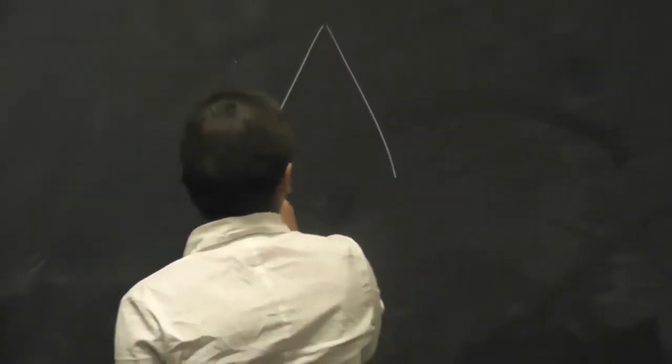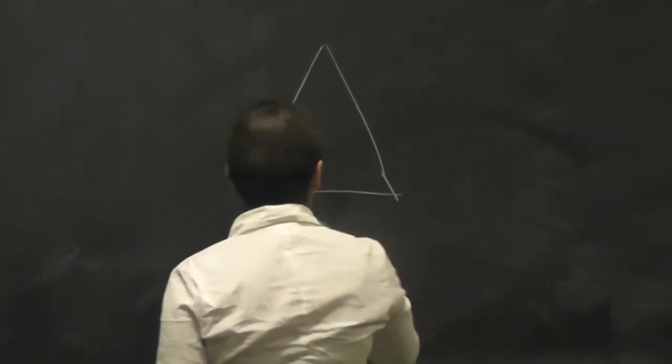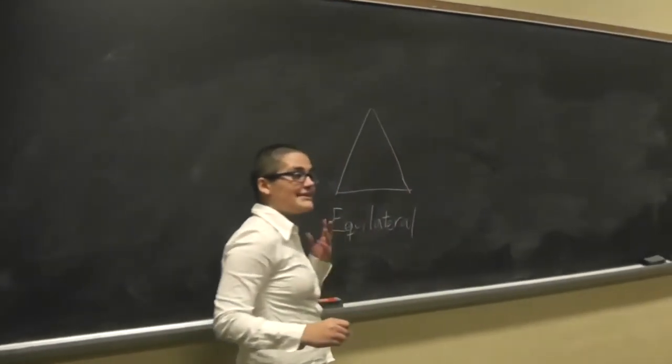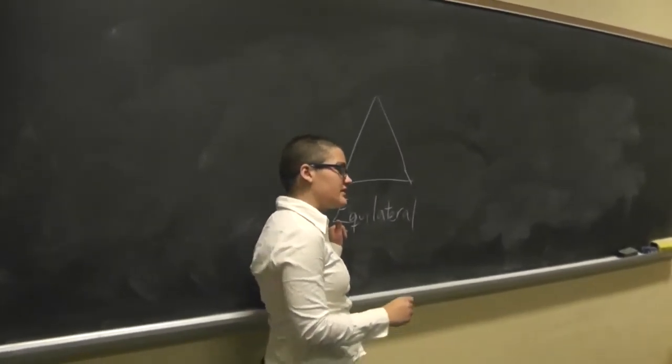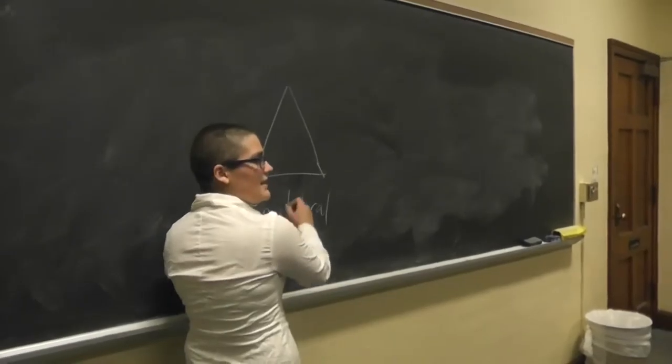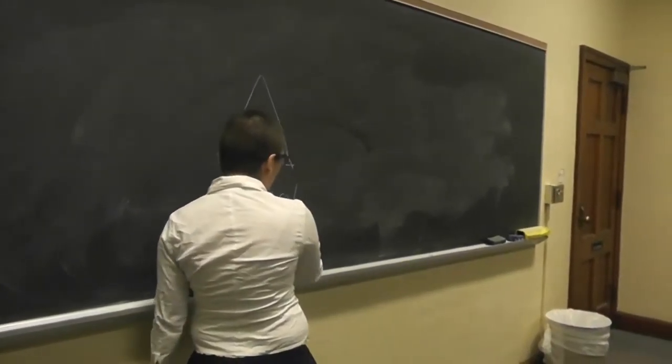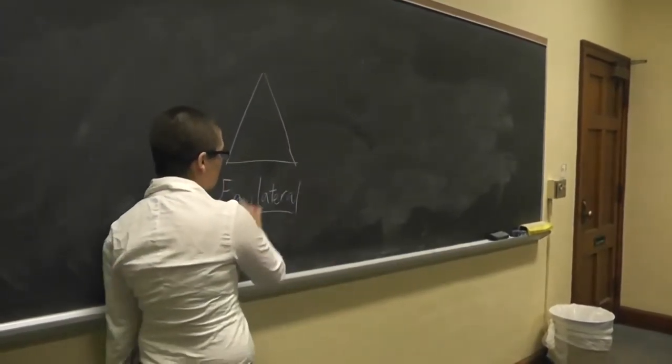Does anyone know what that means, an equilateral triangle? Yeah, Catherine? It means that all of the sides are the same length. Exactly. And you can tell that just by looking at the word because equi is like equal and lateral is from the sides. So, equal sides.